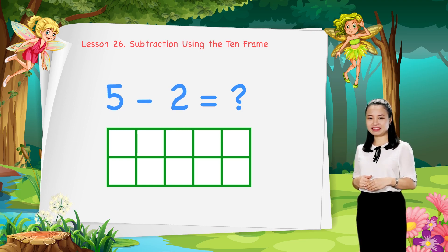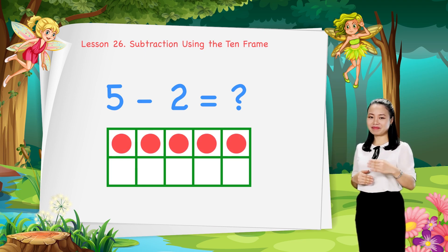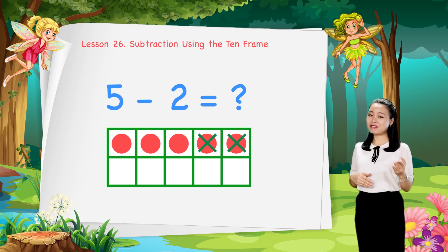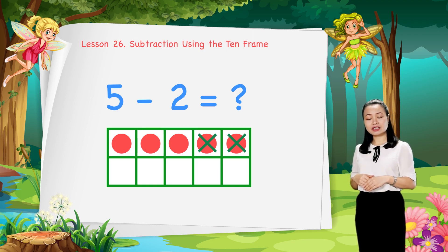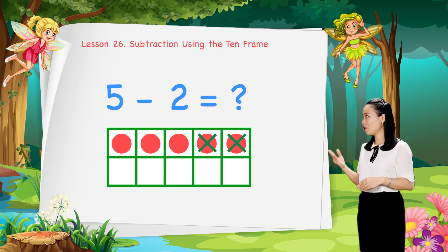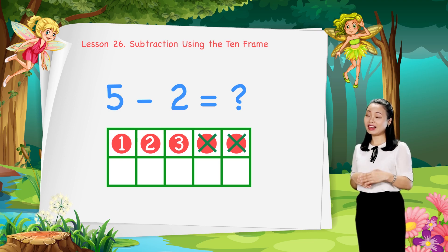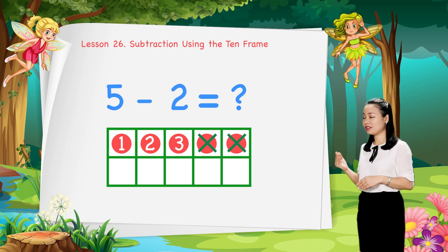We draw 5 dots in the 10 frame. Then, cross out 2 dots. Then, count the number of dots left to find the difference. Let's count: 1, 2, 3. So, 3 dots left. Therefore, 5 minus 2 equals 3.